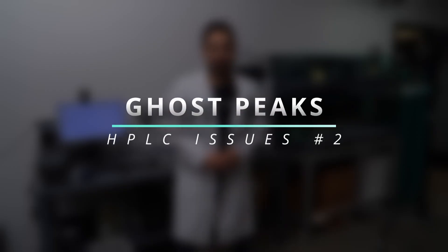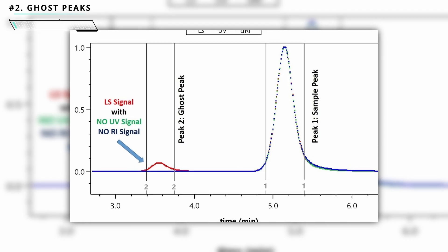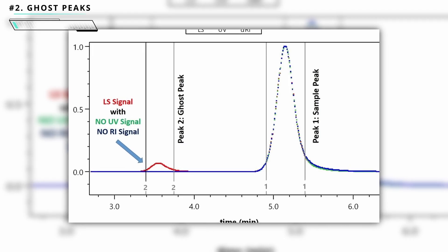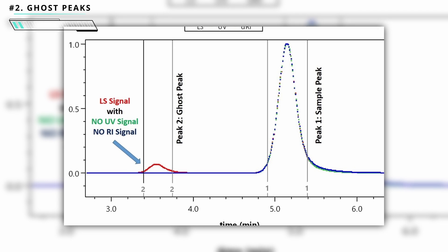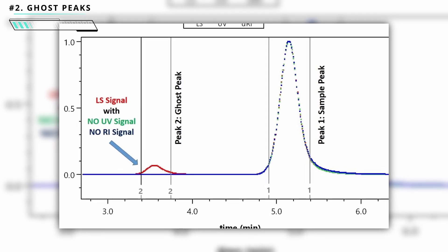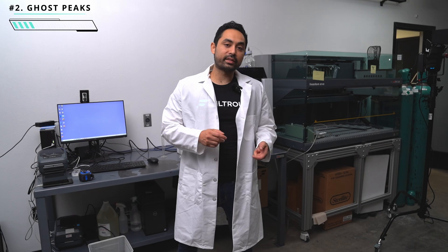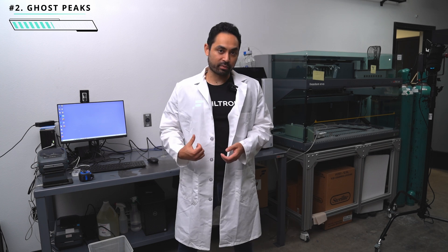The second most common problem is ghost peaks — when you see a peak where you're not expecting one. This could come from a compound carrying over from the previous run. To tell if that's happening, run a blank instead of your next sample, and if you see a peak, you know it's coming from the previous run.